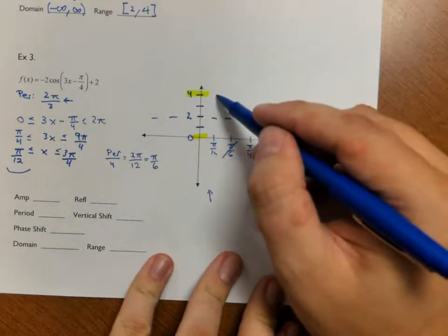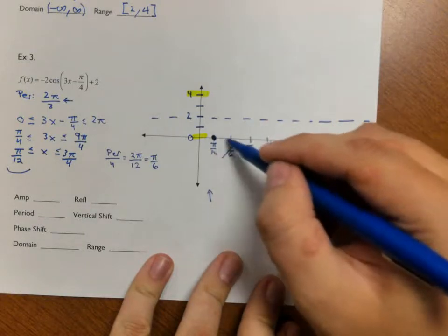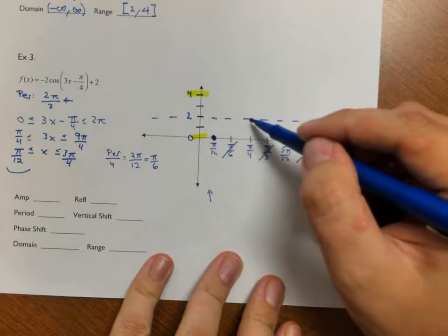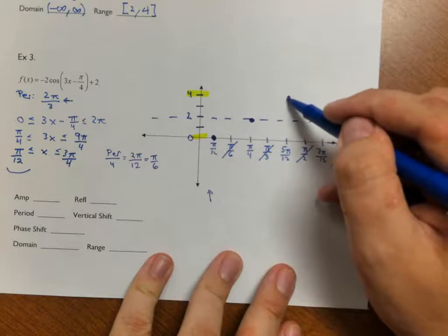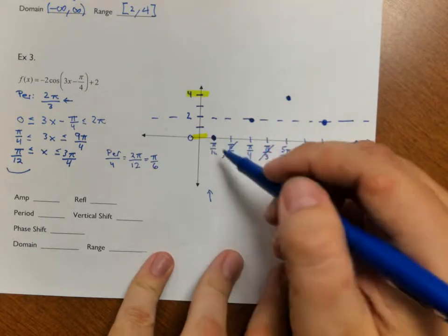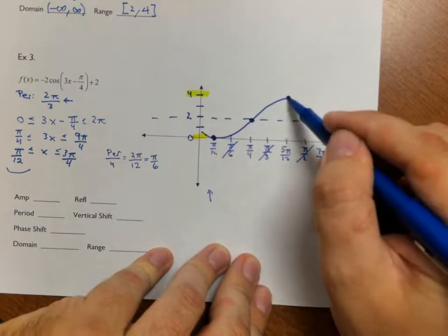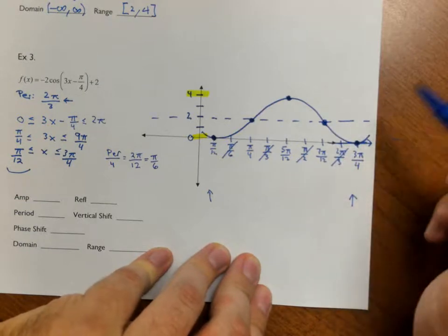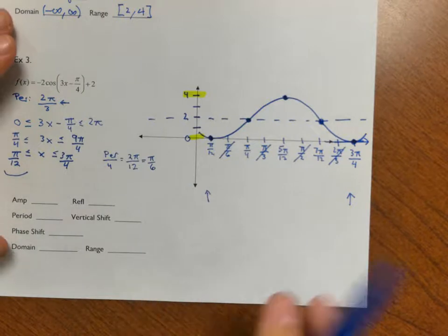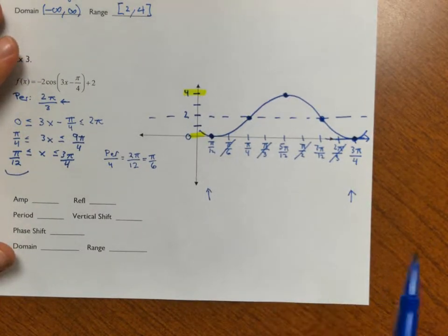This is a cosine with a reflection, so cosine normally starts up high — since there's a reflection, I instead start down low. Starting at π/12: low. At π/4: up to the middle at 2. At 5π/12: up to the top at 4. At 7π/12: back to the middle. At 3π/4: back down to the bottom. I put a nice smooth curve through these points. In situations where the phase shift is inconvenient, expect to add additional markings and skip every so often on your x-axis.